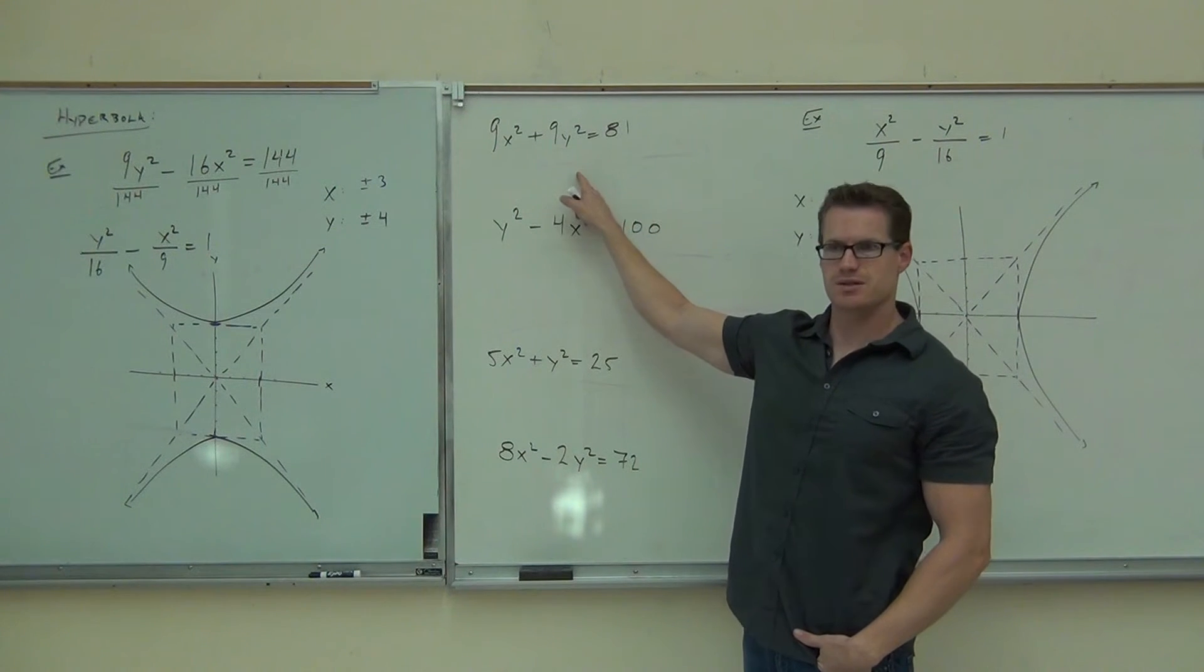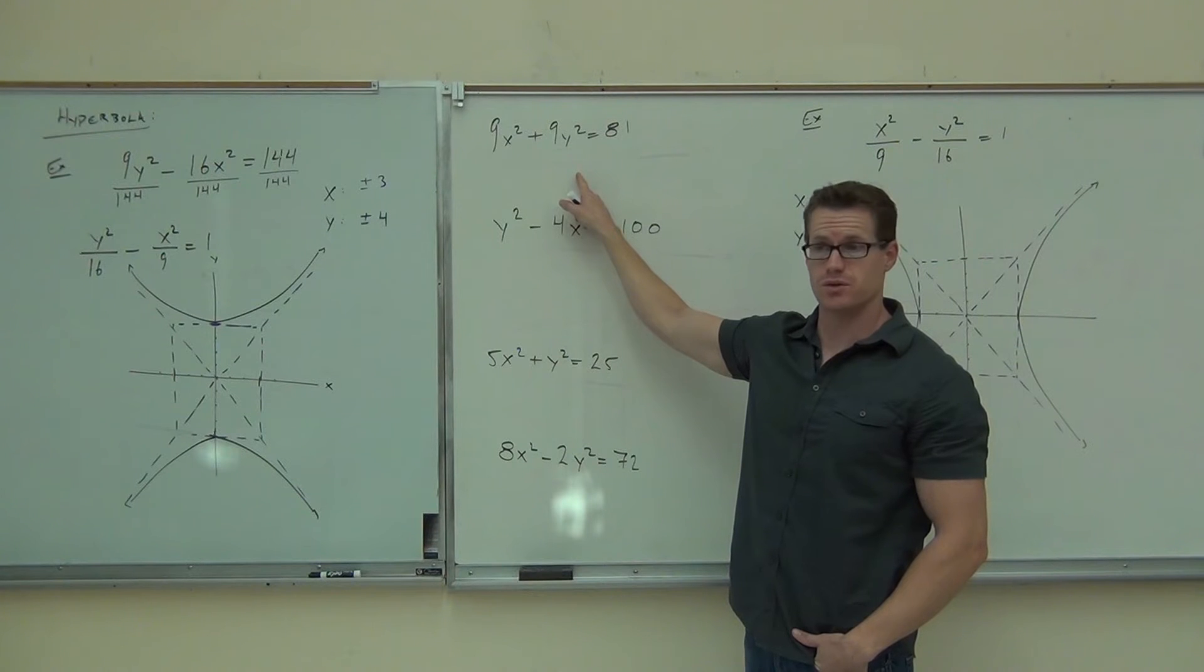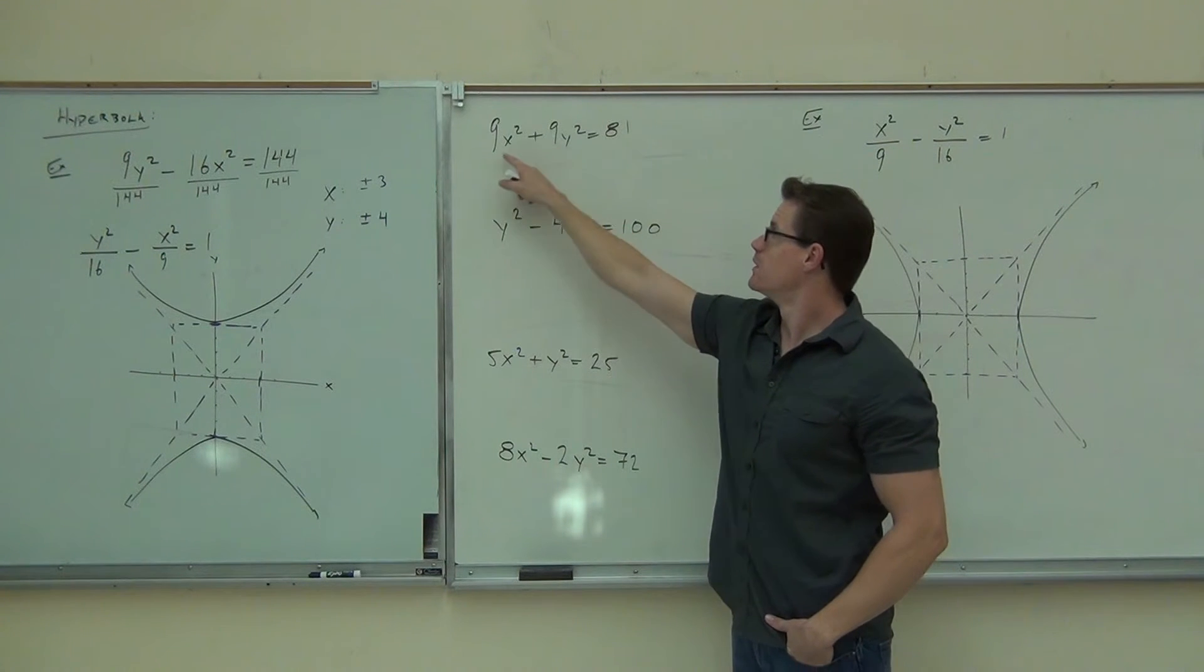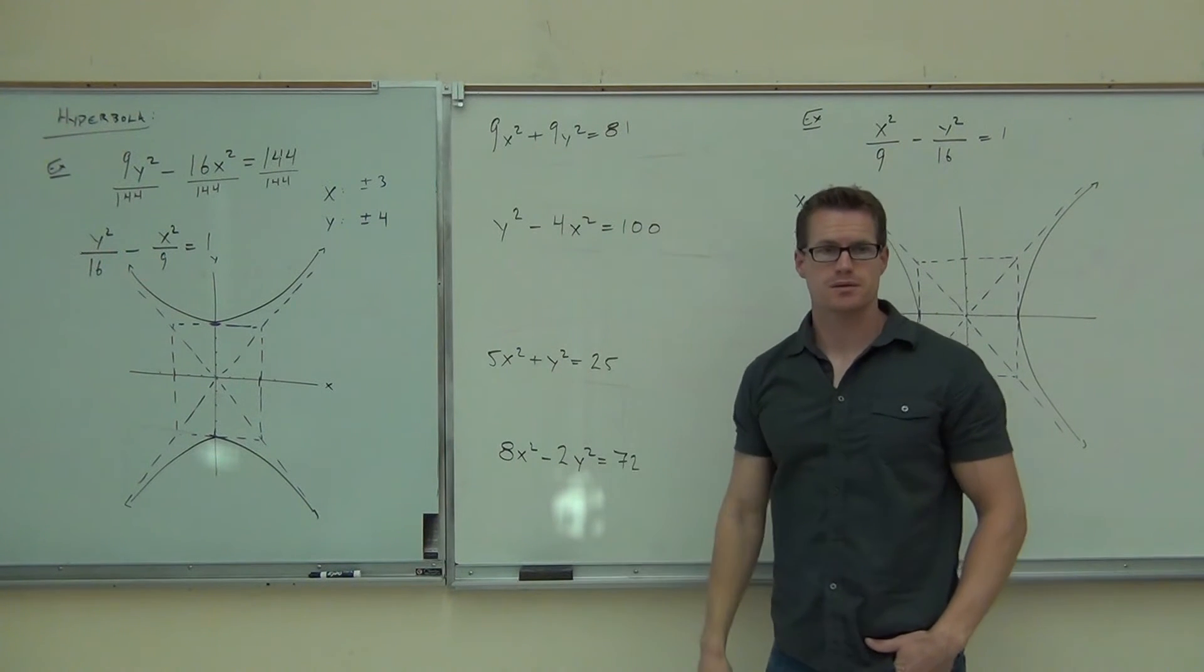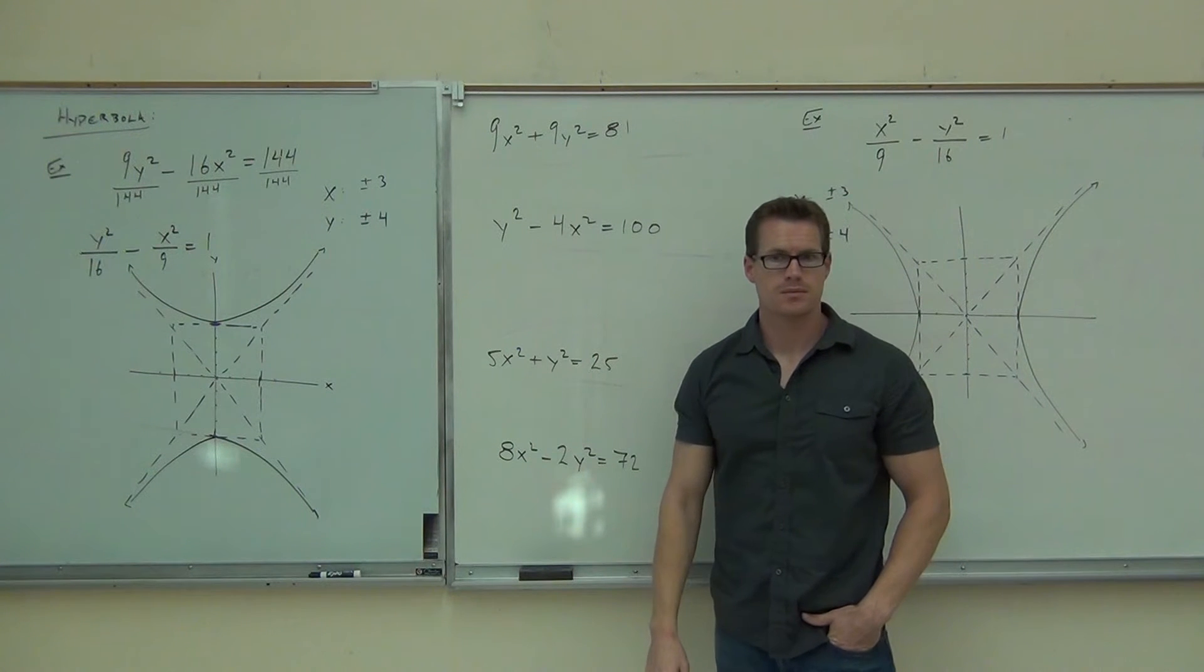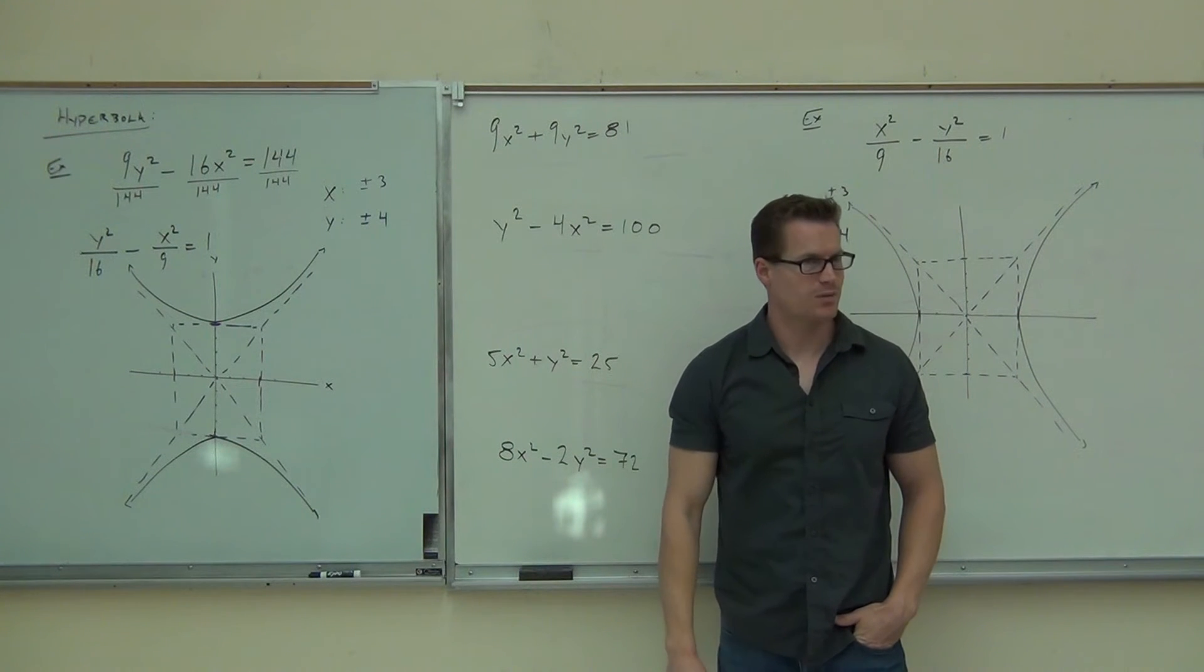Can you identify what that is? Circle. Why is it a circle? If you wanted to have the same number. Okay, what's the radius? Three. Three. Very good. Wow, that was impressive.